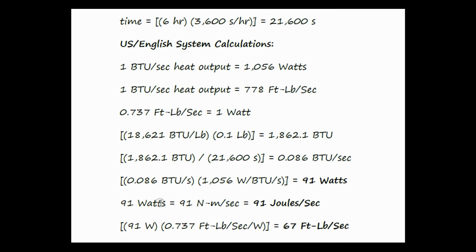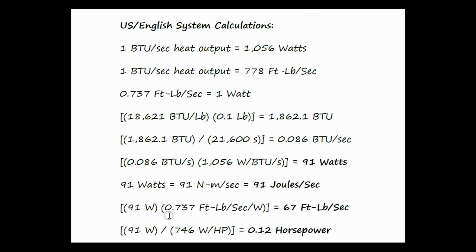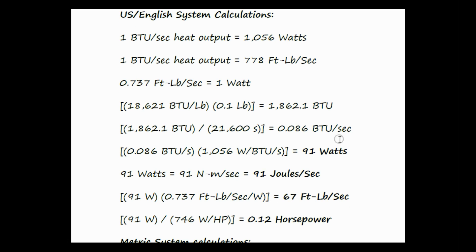91 watts is also equal to 91 newton meters per second, which is also equal to 91 joules per second. 91 watts times 0.737 foot-pounds per second per watt equals 67 foot-pounds per second. 91 watts divided by 746 watts per horsepower is 0.12 horsepower.